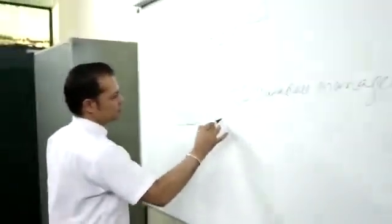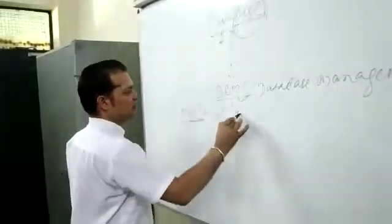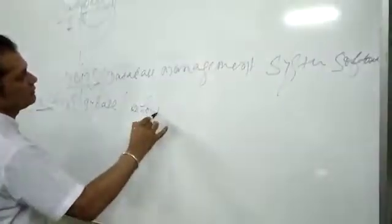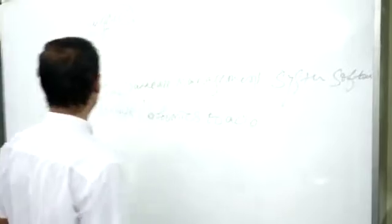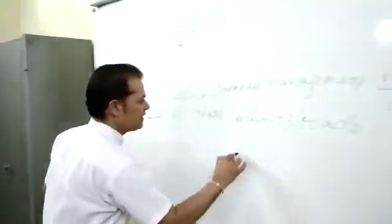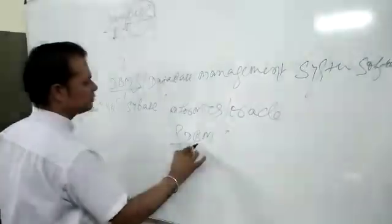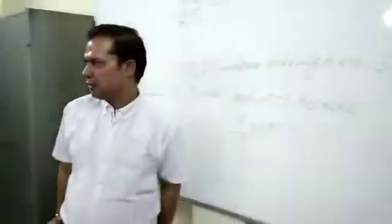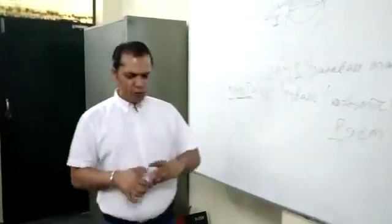We have SQL from Microsoft, then we have Sybase, we have Informix, and we have Oracle. These are all examples of RDBMS software — Relational Database Management System Software. RDBMS helps us to manage the database relationally, while DBMS helps us manage the database whether or not the tables are linked.